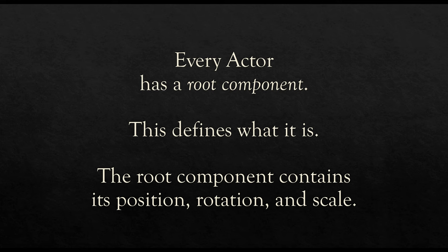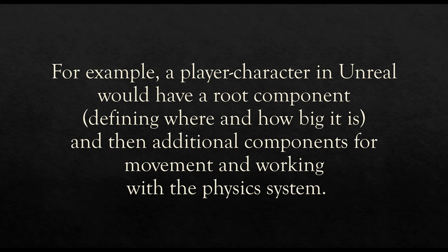Different from a lot of other game engines, in Unreal, components tend to have components. We can think of the actor, the role they're playing as their root component, and maybe additional things they need to do. The reason for this is because we often need to communicate to multiple systems — generally one component per system. We might want to draw things on the screen: one component. Work with a physics system: a different component. Move something: a third component. So player characters in Unreal will often have multiple components — a root component for position and size, additional components for movement, and additional components for physics systems.